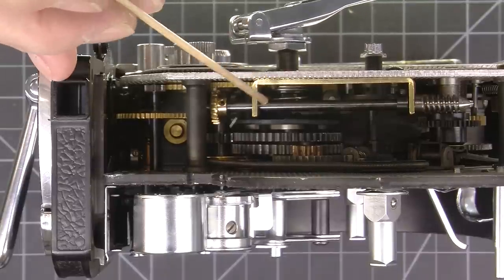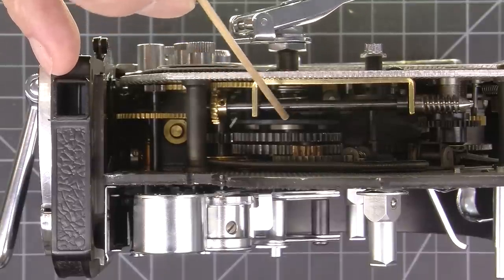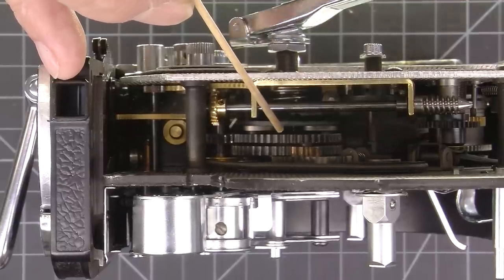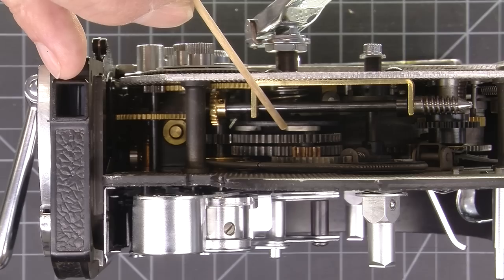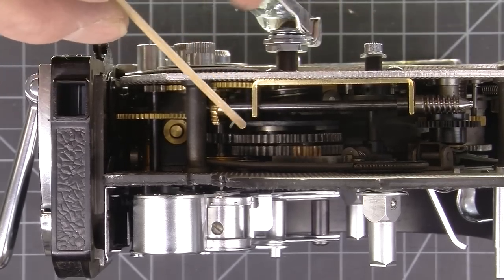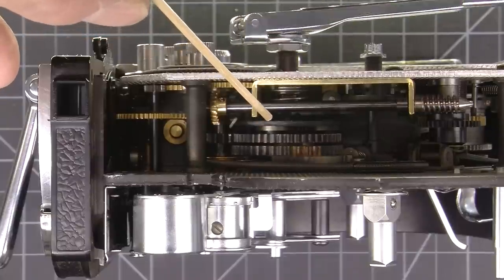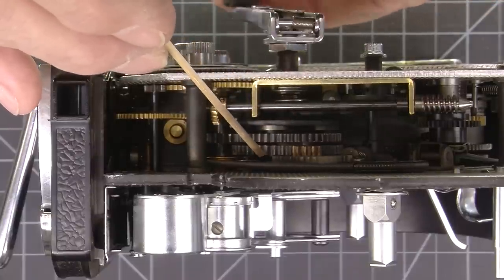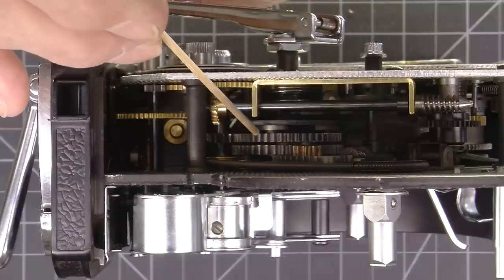And these here are the little ratchet pawls that release when you go the other direction, and allow that gear to turn separately from this gear.